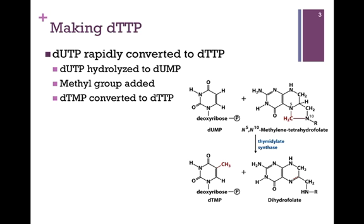Then an enzyme known as thymidylate synthase simply adds a methyl group, highlighted here in red. Once we form the deoxy TMP, it is rapidly converted through phosphorylation to deoxy TTP. In this process, thymidylate synthase uses our familiar cofactor tetrahydrofolate as the one-carbon carrier of the methyl group.